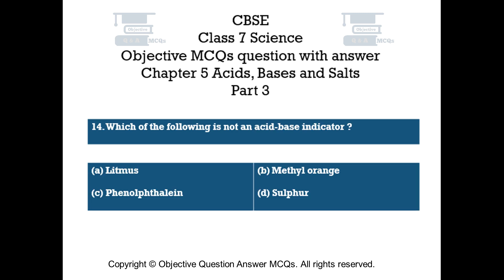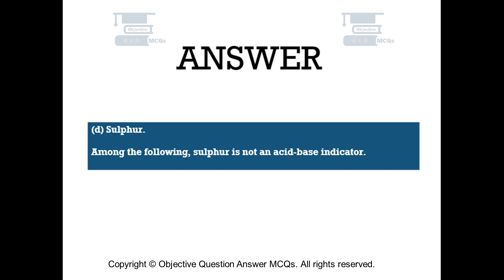Question number 14: Which of the following is not an acid-base indicator? Option A: litmus. Option B: methyl orange. Option C: phenolphthalein. Option D: sulfur. The right answer is option D — sulfur. Among the following, sulfur is not an acid-base indicator.